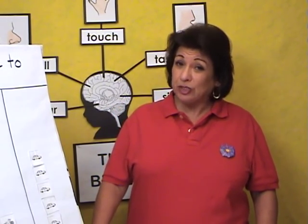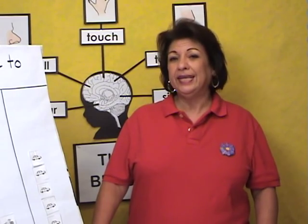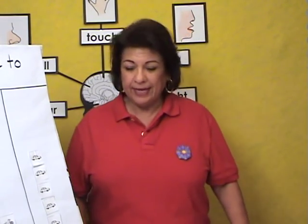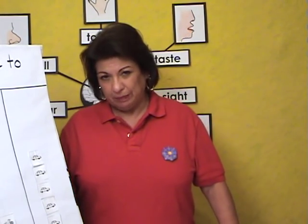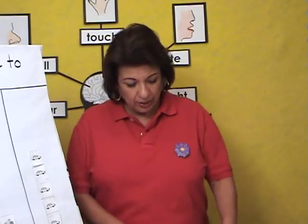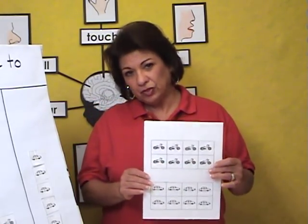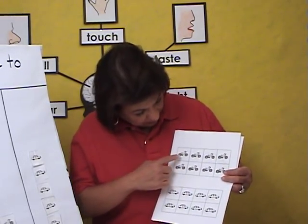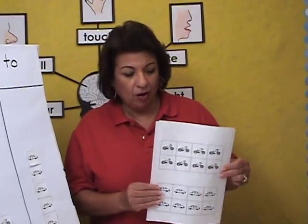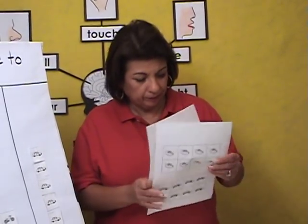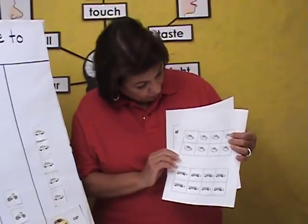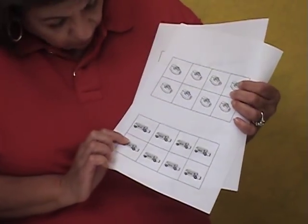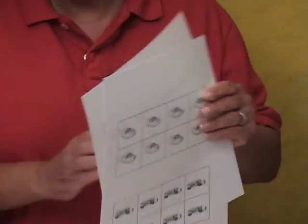They're going to do a picture graph. In this activity the children will come up and choose the type of transportation. They will need the picture cards, which are the bicycle and the car. We also have the tennis shoes for the walkers and we also have the bus.